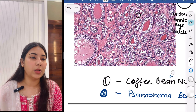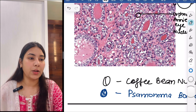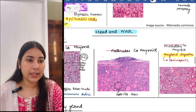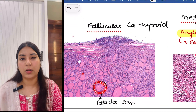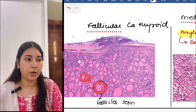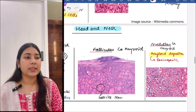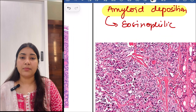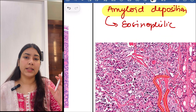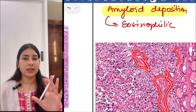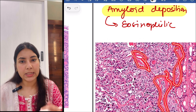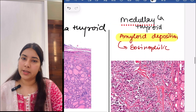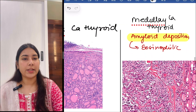Then next is follicular carcinoma of thyroid — you can see follicle-type arrangement, so this is the follicular carcinoma of thyroid. Then next is medullary carcinoma of thyroid — you see a pink color deposition, that is amyloid deposition. That is medullary carcinoma of thyroid.